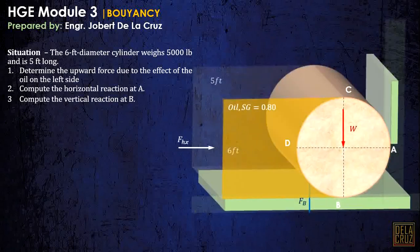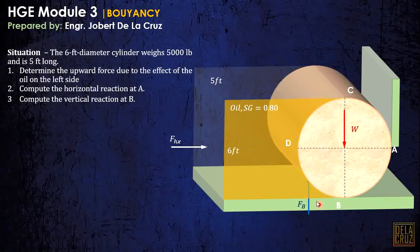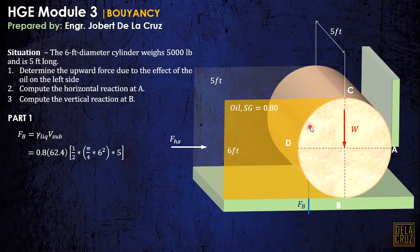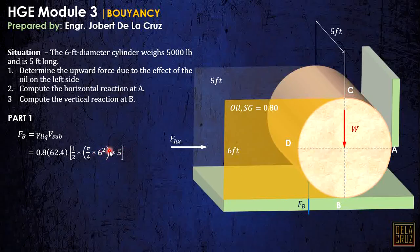The buoyant force is gamma of the liquid times the volume of the displaced space. The cylinder is 5 feet long perpendicular to the view. The volume submerged is half the volume of the cylinder — that is one-half times pi/4 times diameter squared times the length of 5 feet. This gives us the buoyant force.